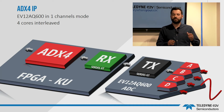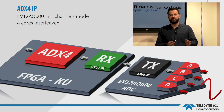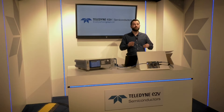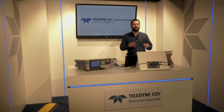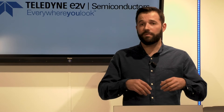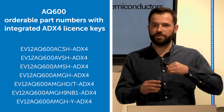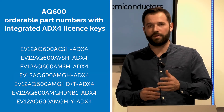You can just copy and paste the IP in your design and you are done. If you plan to use a Kintex UltraScale FPGA and want to simplify your calibration process even more, you can get this IP with the AQ600 ADC for only 15% more per part.